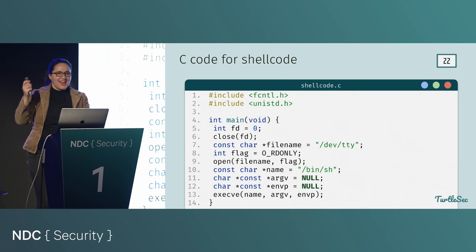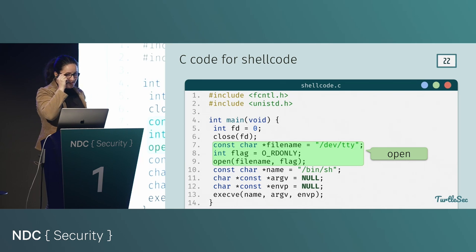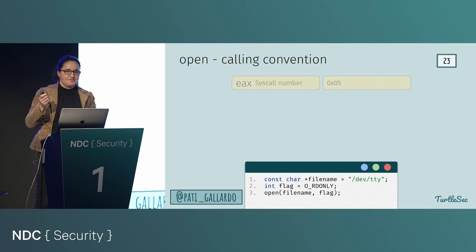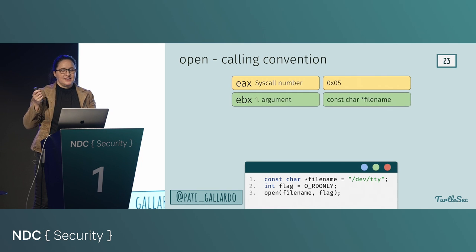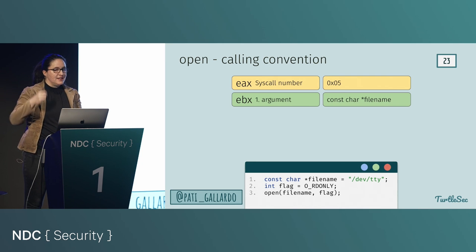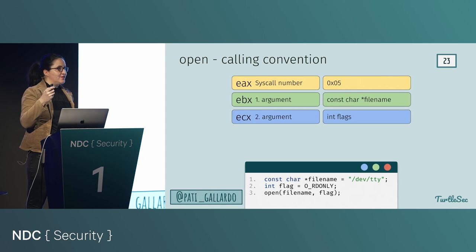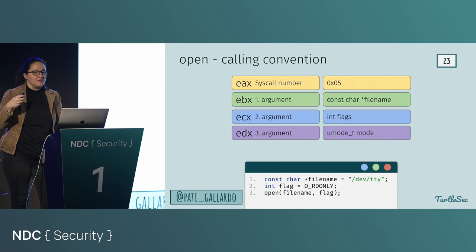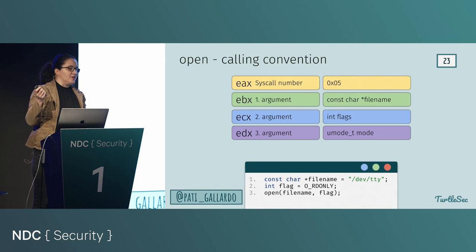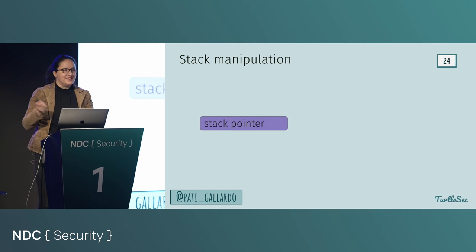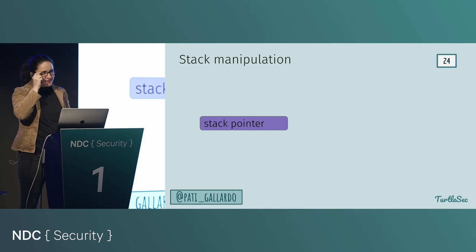For open, it's immediately more complicated because we have a pointer and a string. The calling convention expects the syscall number in eax, the pointer to the filename (the address where the string begins) in ebx, flags as an int in ecx, and a mode (umode_t, essentially an int) in edx. The problem we don't know how to solve yet: how do we get the pointer in ebx, and where does the string live?